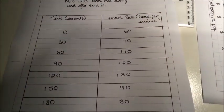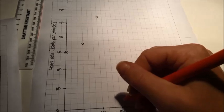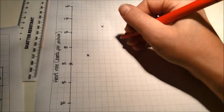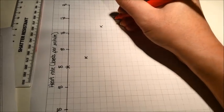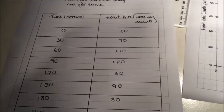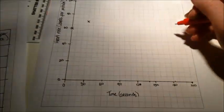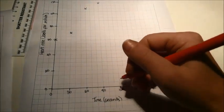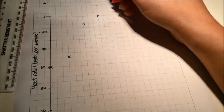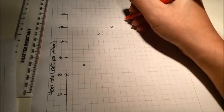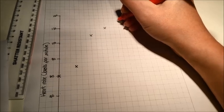Then we have 90 and 120. So we have 90, and we're going to go all the way up to 120. 120 seconds, my heart rate was 130 beats per minute. 120, all the way up to 130. And again, that's in between 120 and 140.